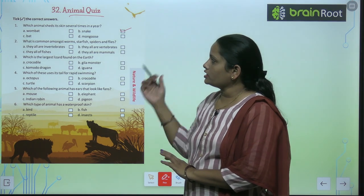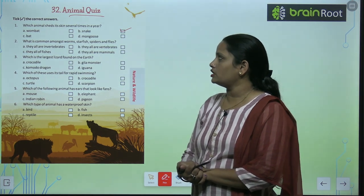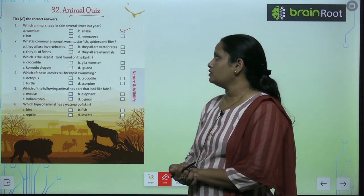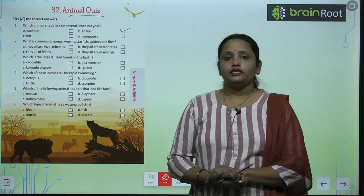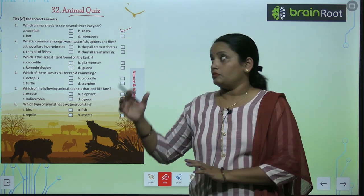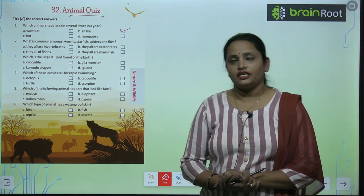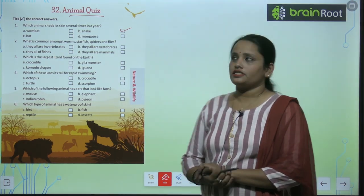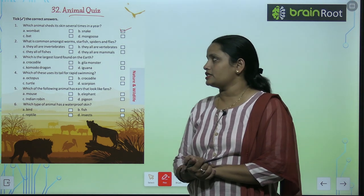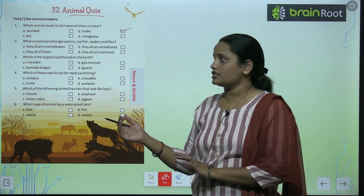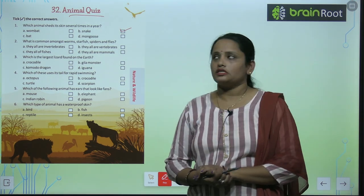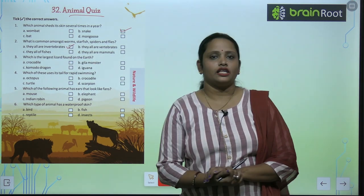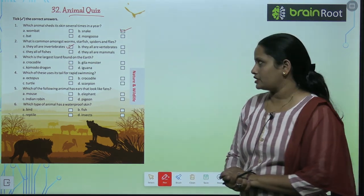Next: what is common amongst worms, starfish, spider, and flies? They all are invertebrates, they all are vertebrates, they all are fishes, or they all are mammals? The correct answer is they all are invertebrates.